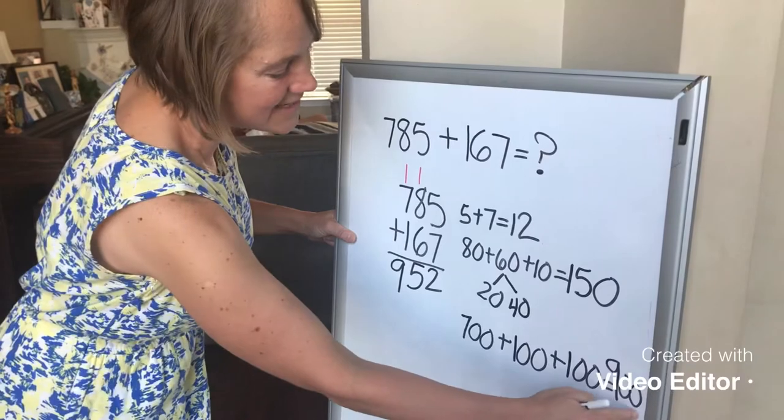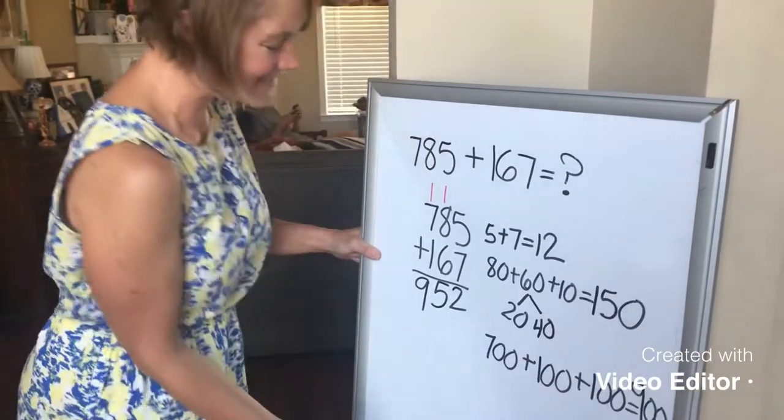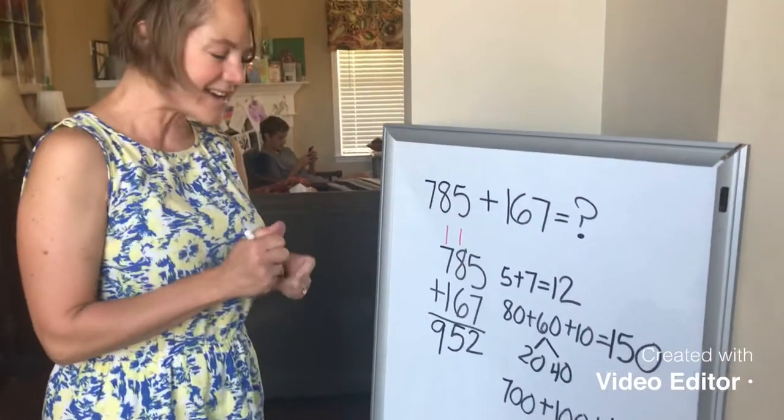I'm not going to even worry about those other 0s, because 50 plus 0 is still 50, and 2 plus 0 is still 2. And there's my sum, 952.